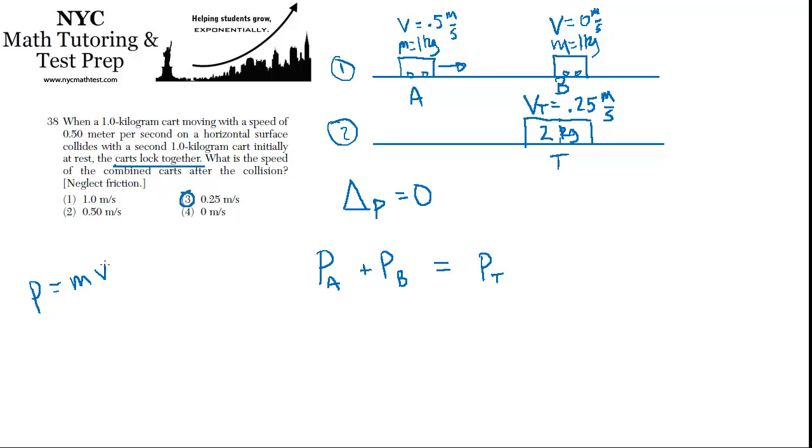Momentum is the product of the mass and the velocity. So the momentum of cart A is its mass, mass A, times velocity A. What about cart B? It's mass B times velocity B, which, by the way, is zero. So this has no momentum.